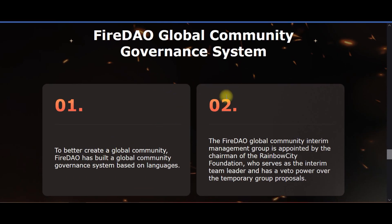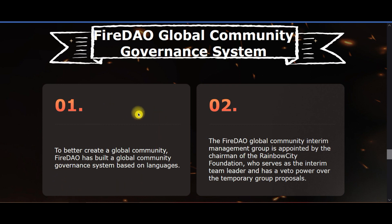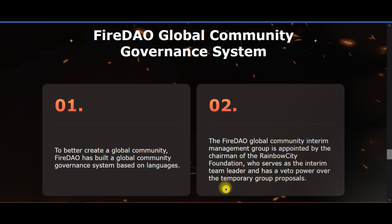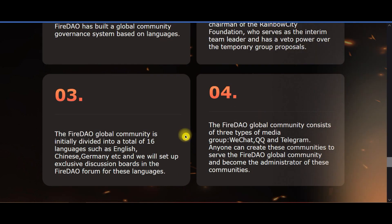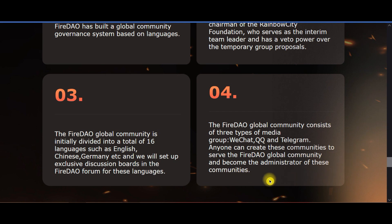FireDAO Global Community Governance System: To better create a global community, FireDAO has built a global community governance system based on languages. The FireDAO Global Community Interim Management Group is appointed by the Chairman of the Rainbow City. The community is initially divided into a total of 16 languages such as English, Chinese, and German. It consists of three types of media groups: WeChat, QQ, and Telegram. Anyone can create these communities to serve the FireDAO Global Community.